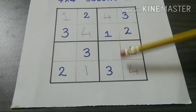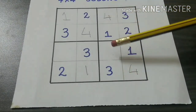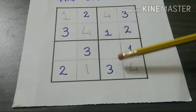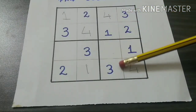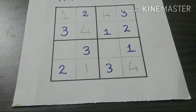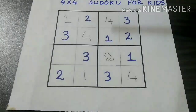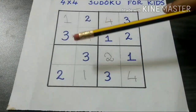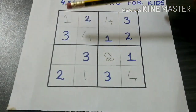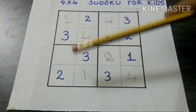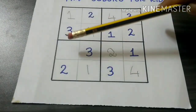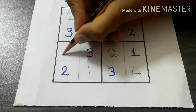Now take this column. There are three numbers: 1, 3, and 2. There is only one number remaining: 4.